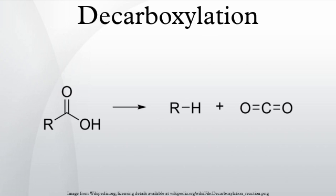In retrosynthesis, decarboxylation reactions can be considered the opposite of homologation reactions, in that the chain length becomes one carbon shorter. Metals, especially copper compounds, are usually required, and such reactions proceed via the intermediacy of metal carboxylate complexes. Decarboxylation of aryl carboxylates can generate the equivalent of the corresponding aryl anion, which in turn can undergo cross-coupling reactions.